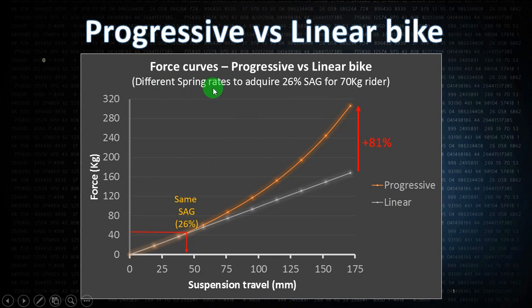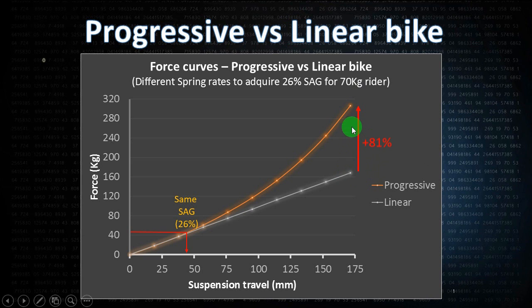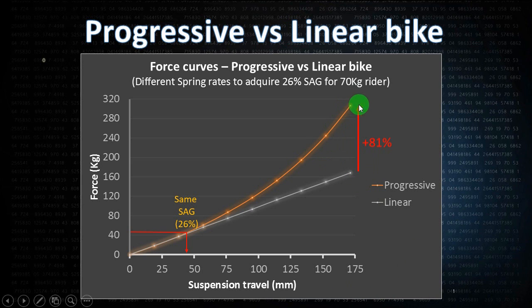In this graph I increased the spring rate of the progressive bike in order to normalize the sag. Now both bikes have the same sag, but as a consequence you end up with an extremely progressive curve and you will need 80 percent more force to bottom out the progressive bike compared to the linear bike. That means you can do drops twice as big on the progressive bike without bottoming out.